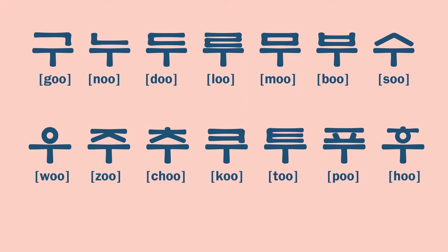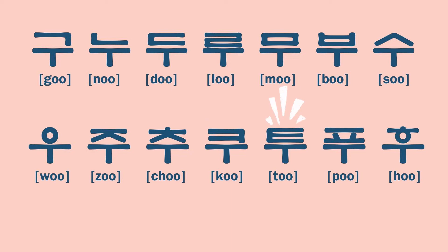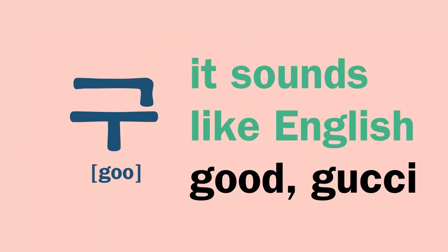Double O sound — say OO like this: OO, GU, NU, DU, RU, MU, BU, SU, U, JU, CHU, CU, TU, PU, HU. Let's read one by one.